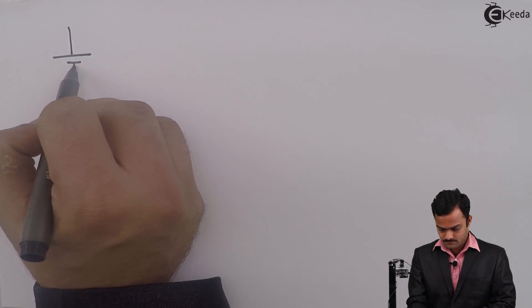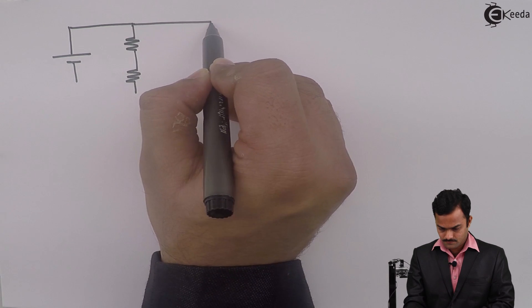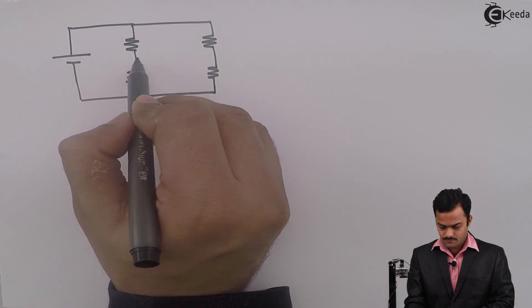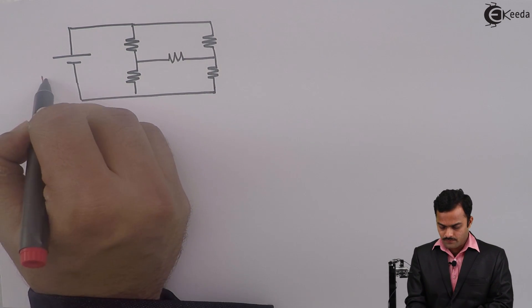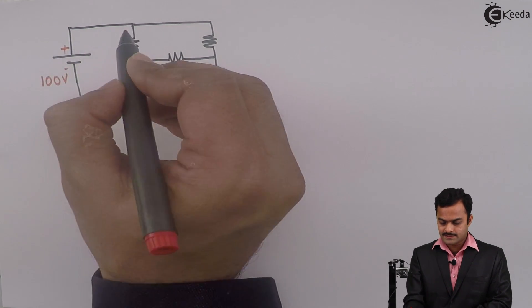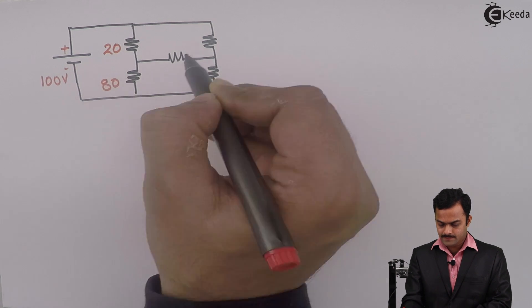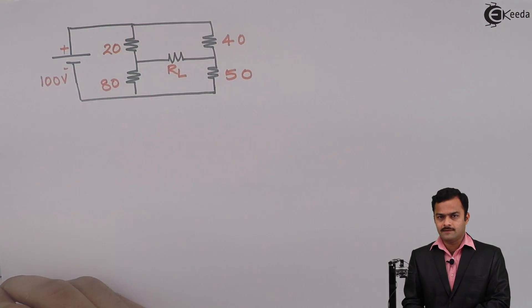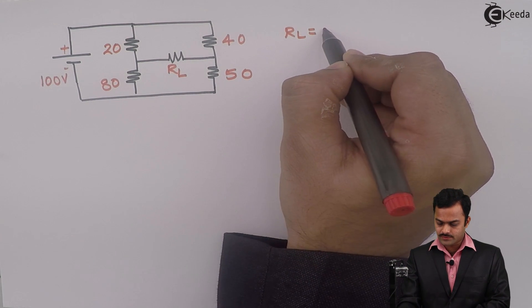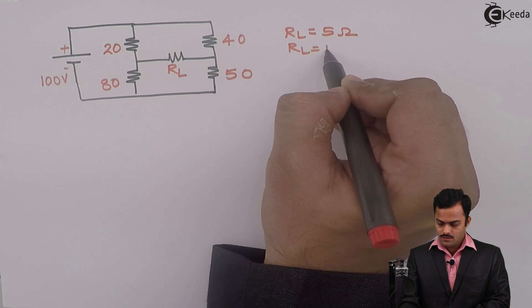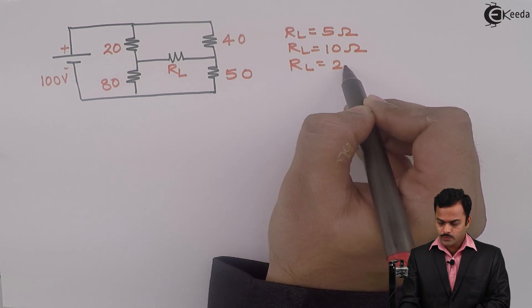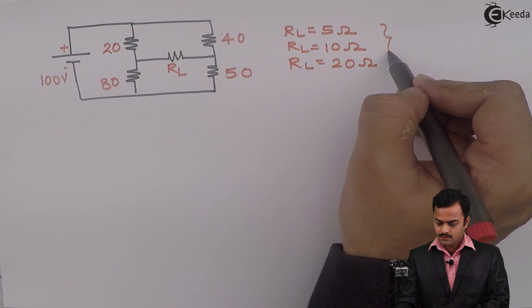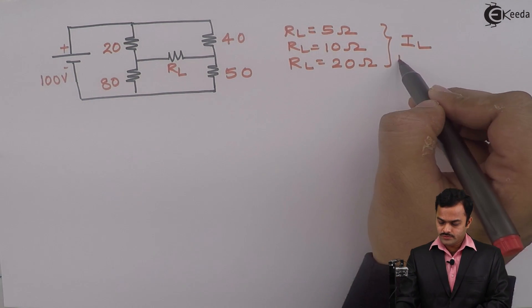Hello friends, let's take a problem where we can use Thevenin's theorem to solve a problem. I have a voltage source of 100V and resistances of 20, 80, 40, and 50 ohm, and here it is a load resistance RL. This load resistance can have three values: 5 ohm, 10 ohm, and 20 ohm. In all three cases, I need to find out what will be the load current using Thevenin's theorem.